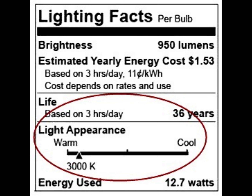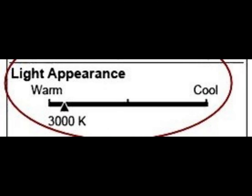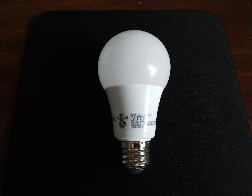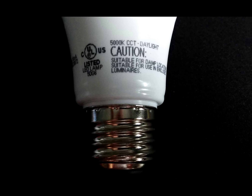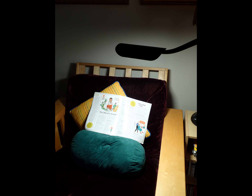You can find the Kelvin measure of each bulb on the box under light temperature or light appearance. There is usually a scale from warm to cool with the bulb's hue indicated on the scale. To find out if your current bulbs are warm or cool, you may need someone with good vision to look at the base of the bulb at the very tiny print for the number followed by a K — that's the Kelvin measure. The real test is to try one in your favorite nearby lamp when you next read and see if you notice a difference.